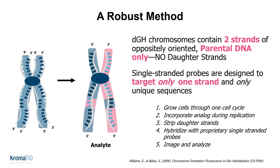A quick overview of how DGH works before showing some applications data. With DGH, we analyze single-strand DNA with single-strand fluorescently labeled oligonucleotides. We design the oligos to be complementary only to unique target sequence, and our probes are pools of these labeled oligos. We perform a sample preparation that results in metaphases comprised of two oppositely oriented parent DNA strands. The probes are engineered to only bind one strand, which means rearrangements are very easy to detect. Any out-of-place signal anywhere in the genome corresponds to a rearrangement. In this fashion, DGH detects not only translocations and complex rearrangements, but also inverted regions.